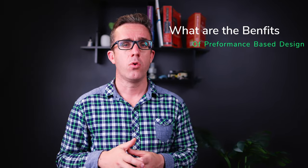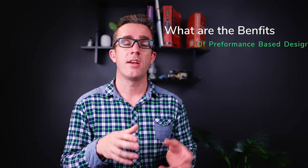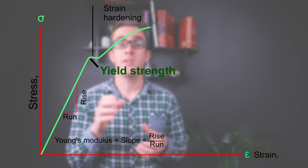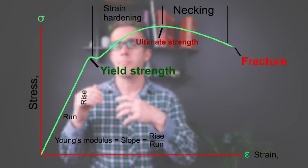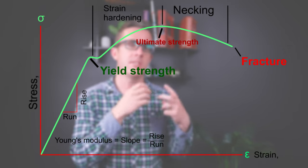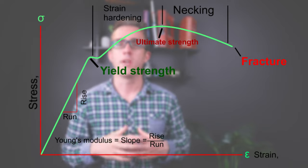Really where you start to save all the savings in performance-based design is when you start to push materials beyond their elastic limits. We all know that most materials have additional strength beyond the elastic range. This is where we're getting into that plastic design, most commonly done in steel, but also existing concrete as well.